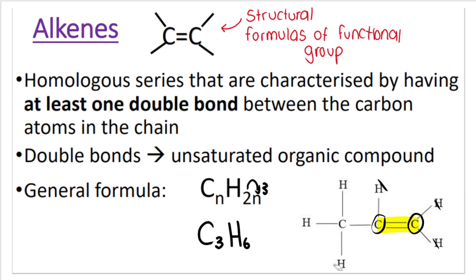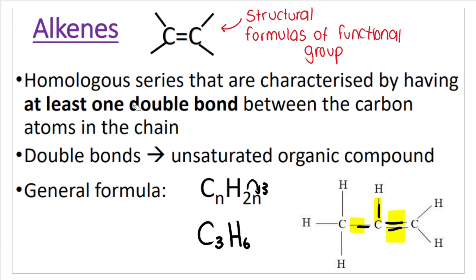Each carbon needs to have four bonds. Take a look at the first carbon: one, two, three, four — four bonds. The second carbon has a double bond, which counts as two bonds, giving one, two, three, four. This is why there's no hydrogen atom attached there. If you're asked to draw an alkene and accidentally add an extra hydrogen, it will be wrong. Every carbon needs four bonds.